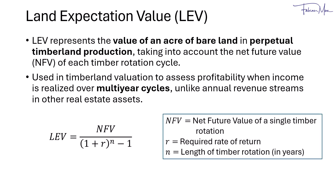To calculate the LEV, we divide the NFV of one timber rotation by the factor (1 plus R) to the power of N, minus 1. In this formula, R represents the required rate of return, and N is the length of one timber rotation in years. This formula allows us to estimate the perpetual value of timberland, treating returns as periodic annuities.